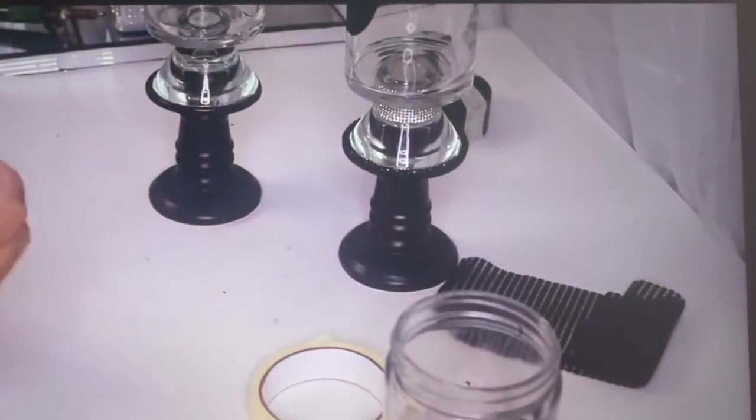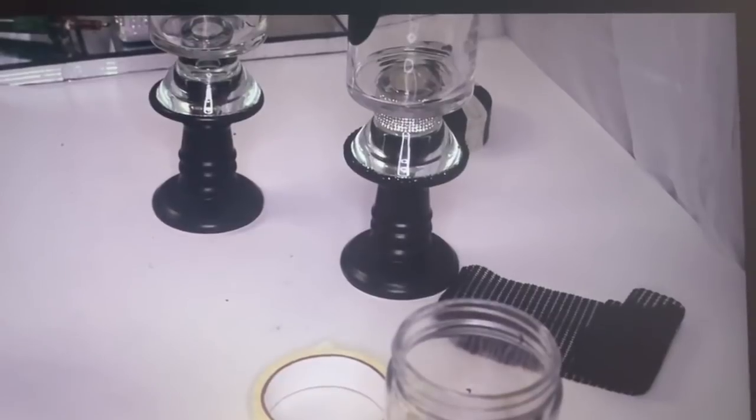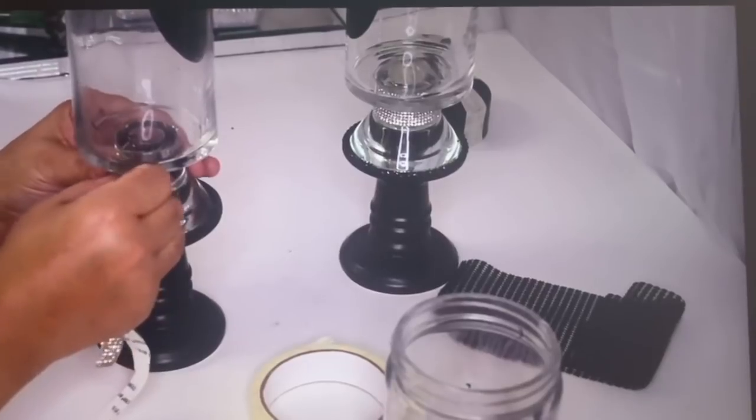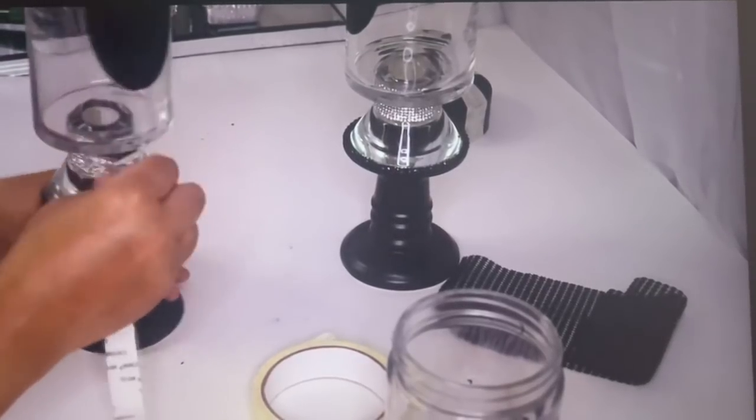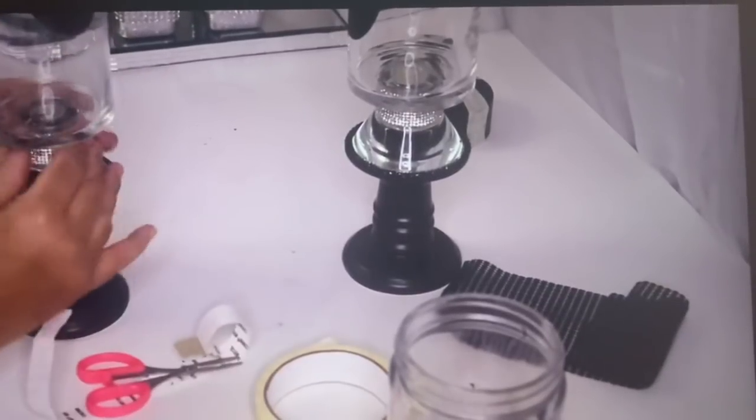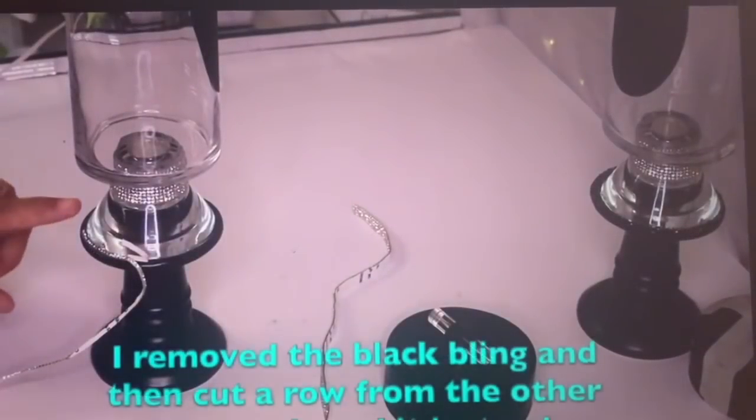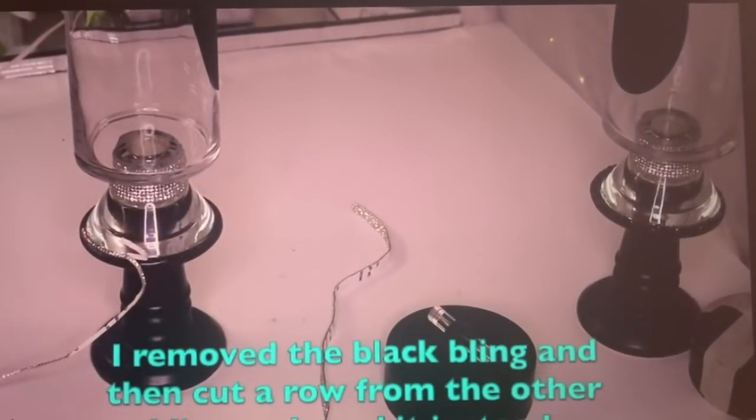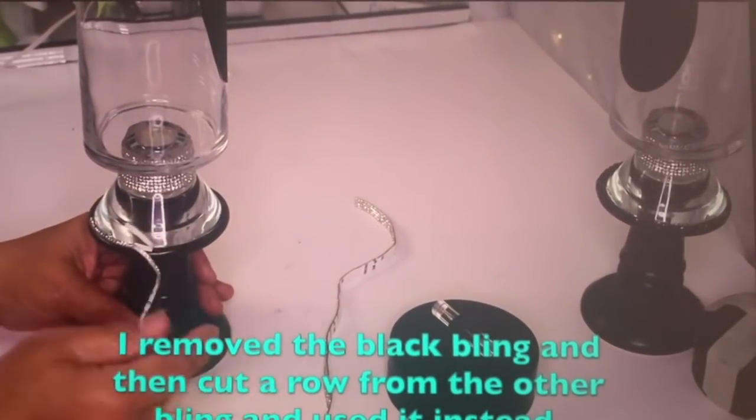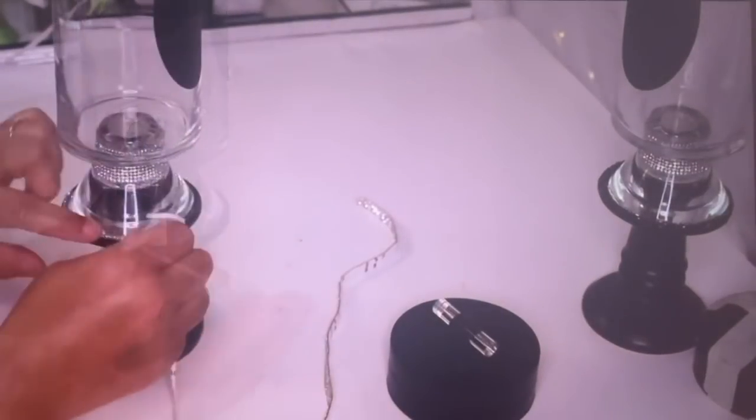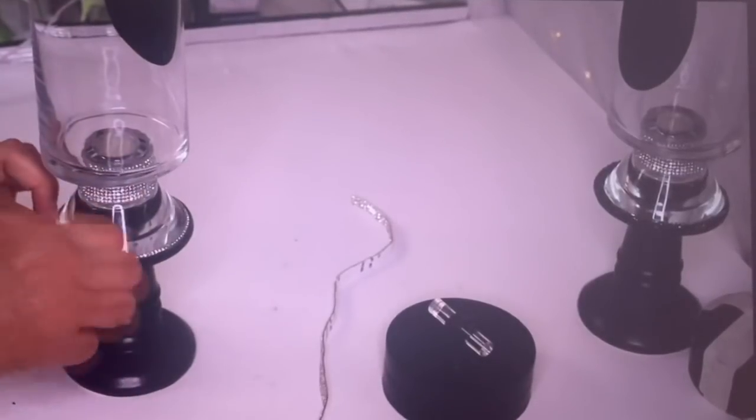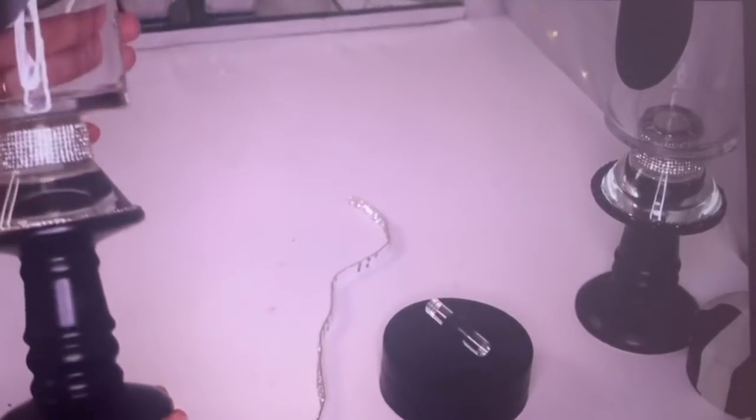To go around the base, you just simply start in the back and wrap it around.